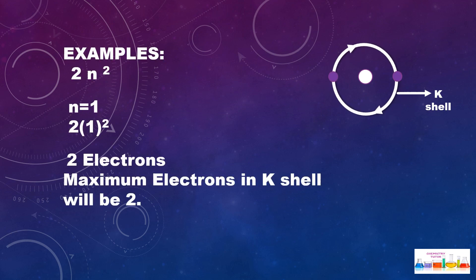Let's take an example. If we are using this formula 2n² to fill the electrons in the orbits, then we will take n equals 1. 2 into 1² equals 2 electrons. It means that maximum electrons in K shell will be 2. You can see here this is the first shell, which is known as K shell, and here two electrons can accommodate.